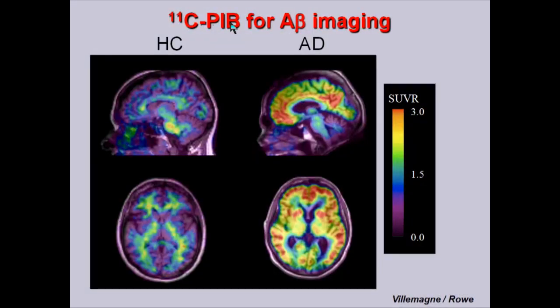About 10 years ago, colleagues in Pittsburgh — Bill Klunk and Chet Mathis — took a compound known for 40 years, an analog of thioflavin T, called it Pittsburgh Compound B (PIB), and tweaked it so it actually crossed the blood-brain barrier. Once you can get a molecule through the blood-brain barrier, you can label it with radioligands and follow its retention in the brain by PET scan. Comparing a healthy control to an Alzheimer's patient is like night and day — you can see the retention signal sitting there — giving us a real breakthrough in understanding the natural history of Alzheimer's disease.